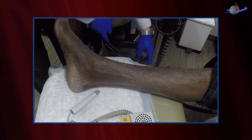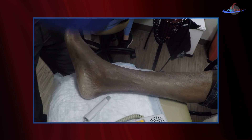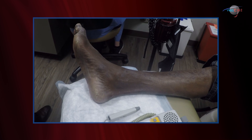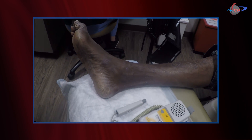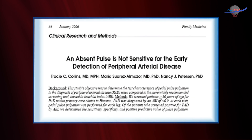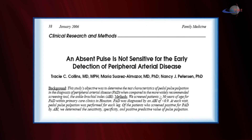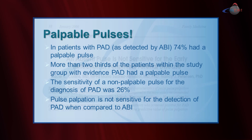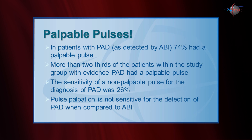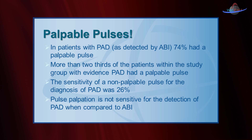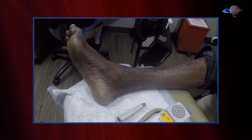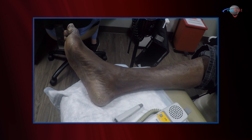And in fact, we know from the literature that patients with diabetes who have peripheral arterial disease, many will have a palpable pulse. There was a publication in Family Medicine, January 2006, by Dr. Collins. The title of that article: 'An absent pulse is not sensitive for the early detection of peripheral arterial disease.' That study showed that more than two-thirds of the patients in the study group who had evidence of PAD also had a palpable pulse. So don't stop when you feel a pulse — look further, think further. These patients will often have occult peripheral arterial disease.